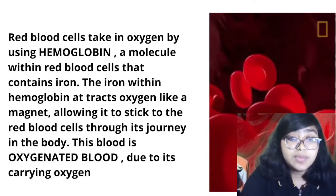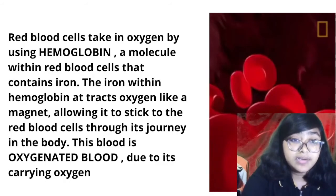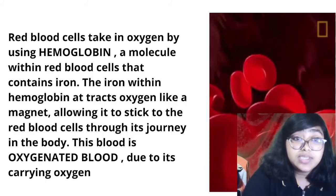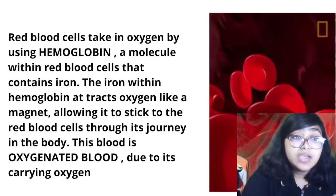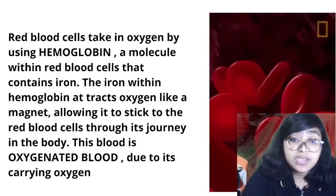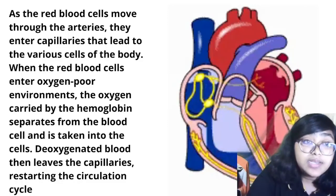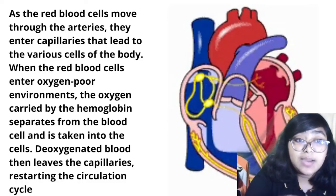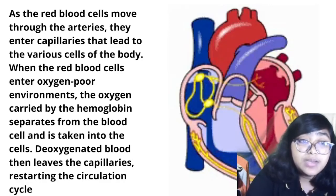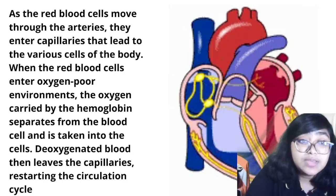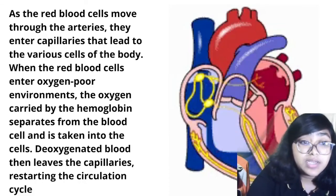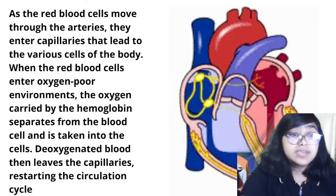Red blood cells take up oxygen using hemoglobin — a molecule within red blood cells that contains iron. The iron within hemoglobin traps oxygen like a magnet, allowing it to stick to the red blood cells throughout the journey in the body. The blood is then called oxygenated blood. As red blood cells enter the capillaries and reach an oxygen-poor environment near body cells, the oxygen carried by hemoglobin separates from the blood cells and is taken into the cells. Deoxygenated blood then leaves the capillaries, restarting the circulatory cycle.